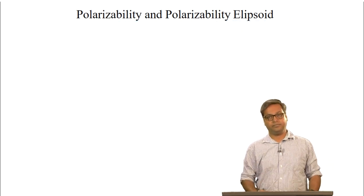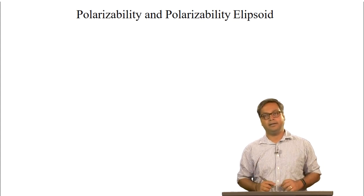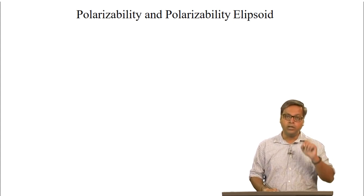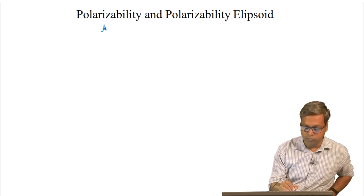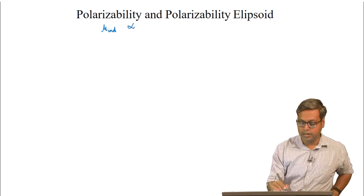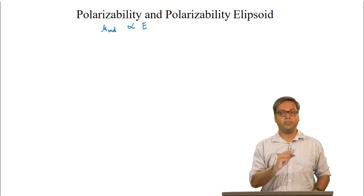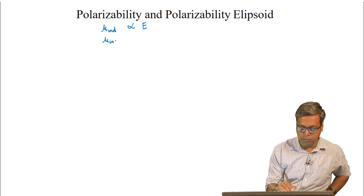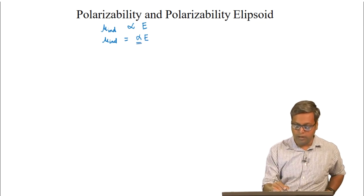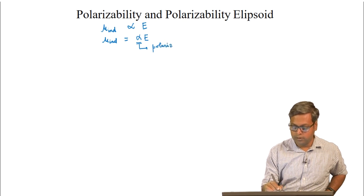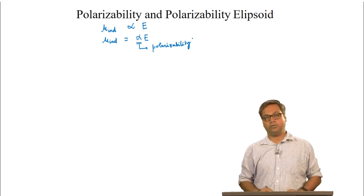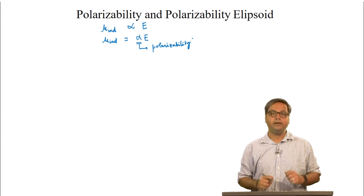In the first lecture on Raman spectroscopy, we had stated that as long as the electric field of the electromagnetic radiation is not too strong, the induced dipole moment — which we can write as mu induced — is directly proportional to the applied electric field E. So we can write mu induced equals alpha times E, where alpha here is polarizability. The polarizability is a characteristic of the molecule that depends on the molecular structure and the nature of the bonds.